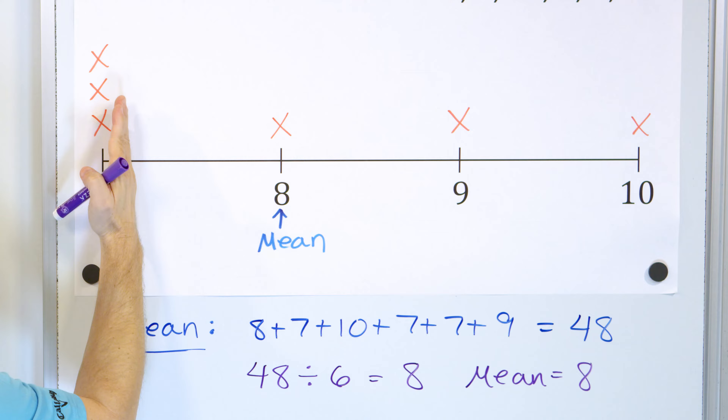Let's move on to the mode. Mode is actually the easiest of all. For the mode, all you do is look through your data and pick the number that occurs most often. It's not a calculation — you just figure out which one happens more often. I have a 7, a 7, a 7 — three 7s — only one 8, only one 9, only one 10. Because I have three 7s, the mode is equal to 7. So the mean was 8, the median was 7.5, the mode was 7 — three different ways of finding the center, all different numbers.